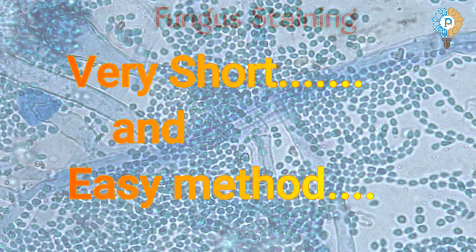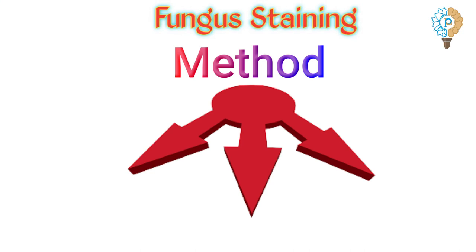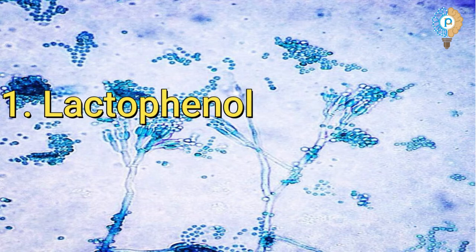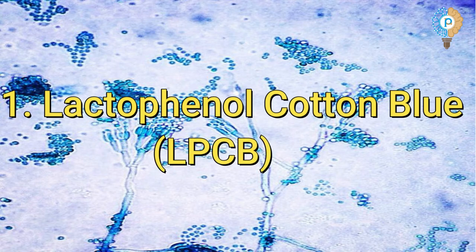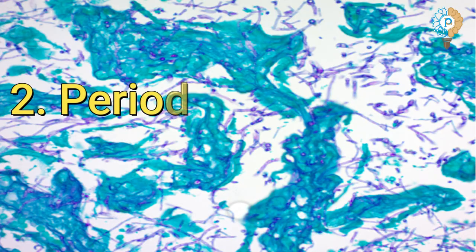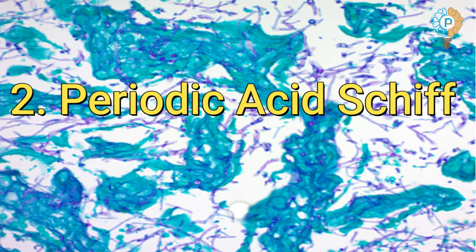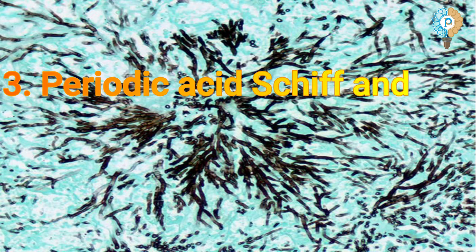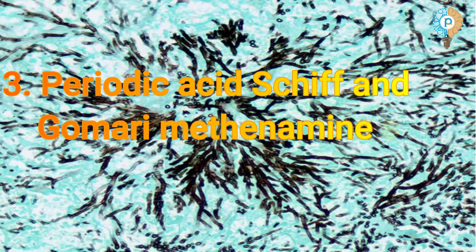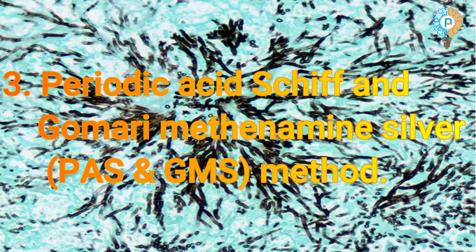Fungal staining is a very short and easy method. There are mainly three types of methods which we generally use for fungal staining. The first method is Lacto Phenol Cotton Blue method, also known as the LPCB method, which is most widely used in all fields. The second method is Periodic Acid Schiff method, also known as the PAS method. The third and last one is the Periodic Acid Schiff and Gomori Methenamine Silver method, also known as the PAS and GMS method.